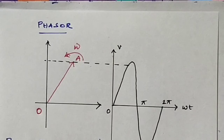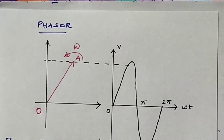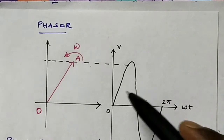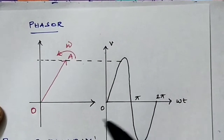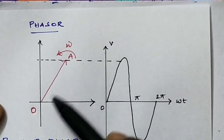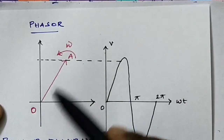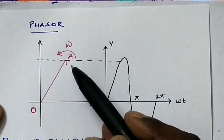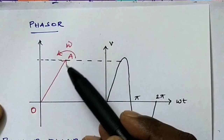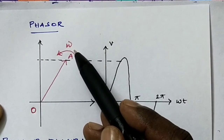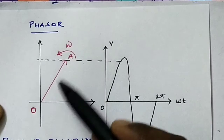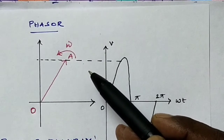Hello everyone. Today I discuss the topic phasor. Under phasor diagram, phasor means a sinusoidal alternating voltage. A sinusoidal alternating voltage can be represented by a vector OA, which rotates about the origin in an anticlockwise direction at a constant angular velocity omega. Such a rotating vector is called the phasor.